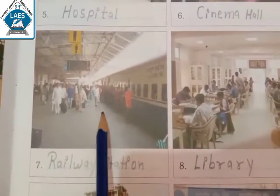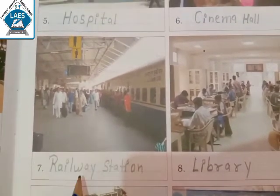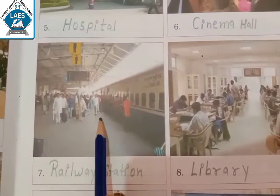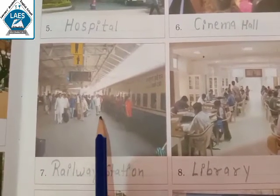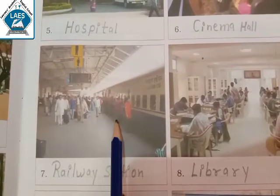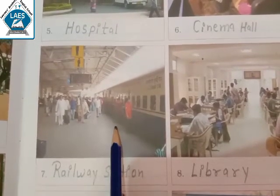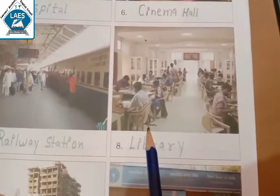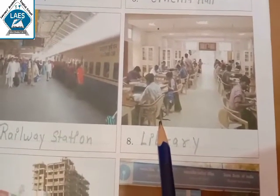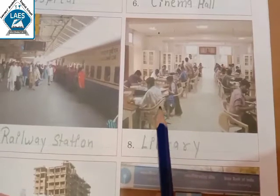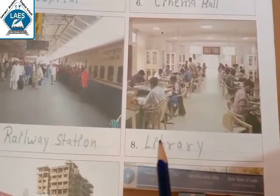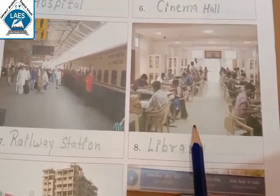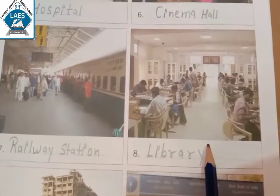Next is railway station. Railway station is where many trains stop and come. Library is where there are many books which we can read. Library picture you can see — library is where many books we can read.